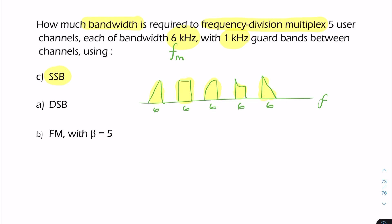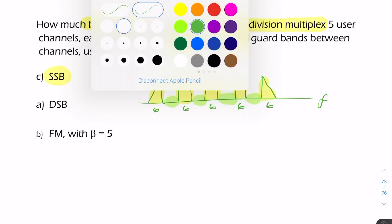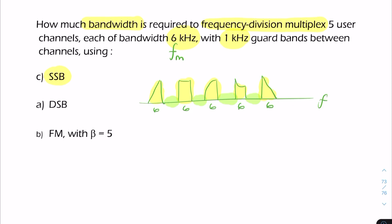Between each of these stations you have the guard band—that's 1 kilohertz. The guard band is the distance on the frequency axis between adjacent spectra. You have 1 kilohertz here, here, here, and here. We don't need to worry about either side; we're talking simply about these five user channels.